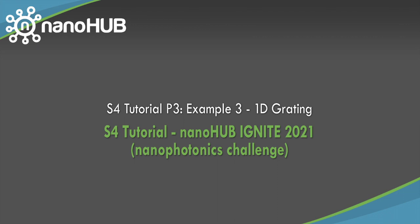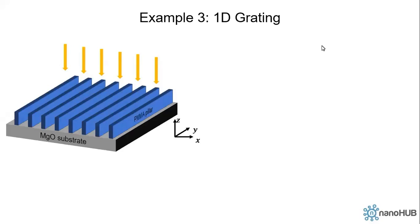Nanohub.org: online simulation and more for nanotechnology. Okay, the last example we're going to look at is 1D grating. Diffraction grating is a very important device in optics. It can split and redirect the incoming light. Here we have a very rough model of 1D grating made of PMMA pillars on top of magnesium oxide substrate.